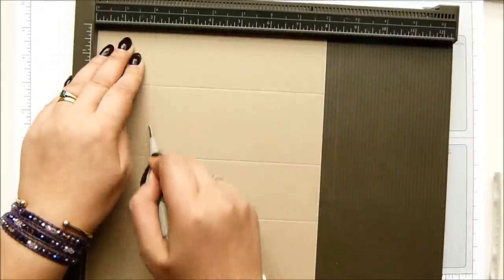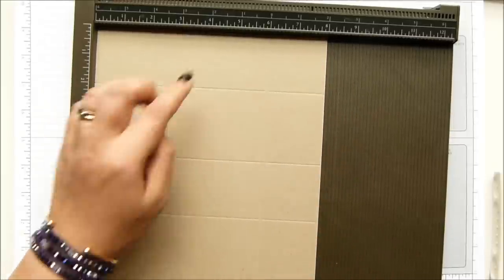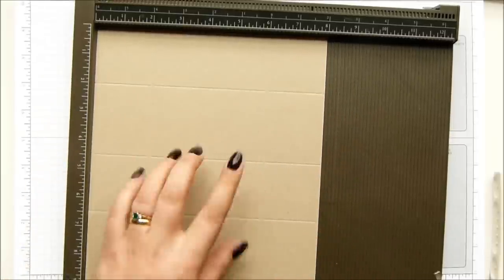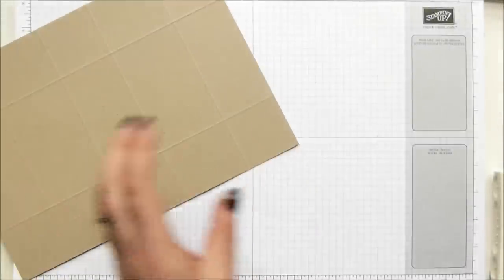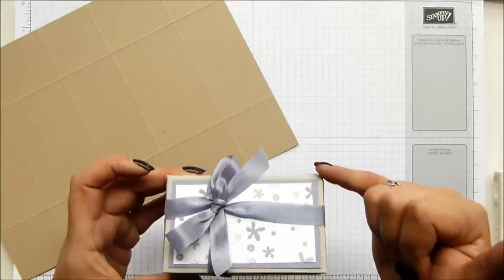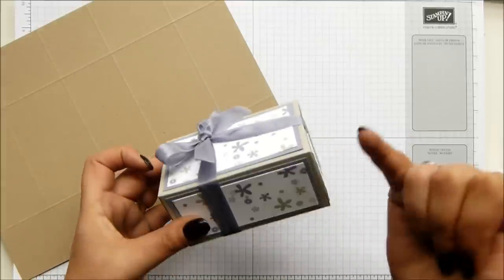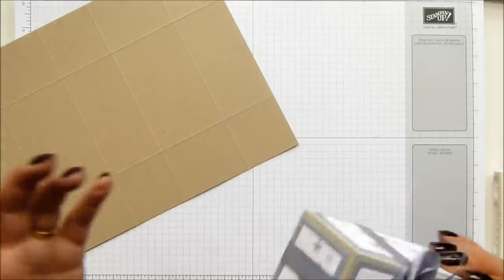Turn it around and score it at 2 and 6, which is 5 and 15 centimeters. And the finish size of the box is 4 inches by 2 1/2 by 2 inches deep, which is 10 centimeters by 6 1/2 by 5 centimeters. So a good size.